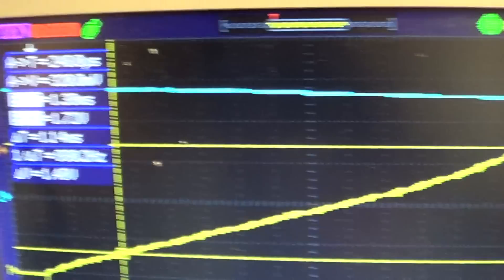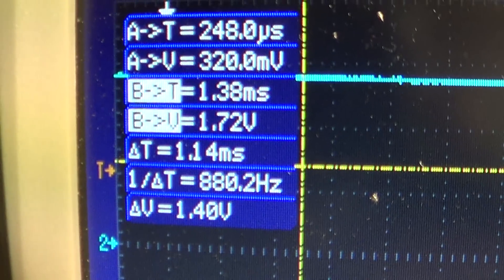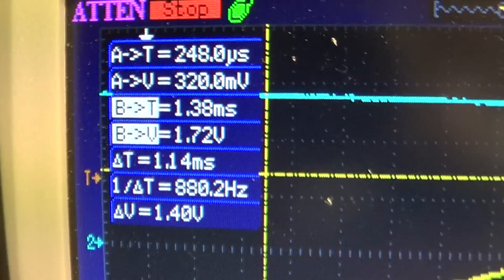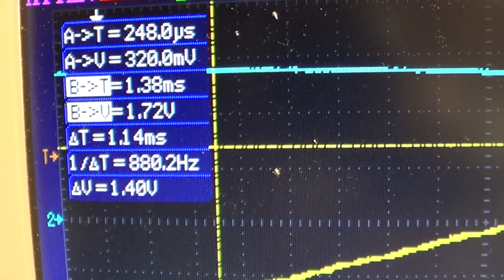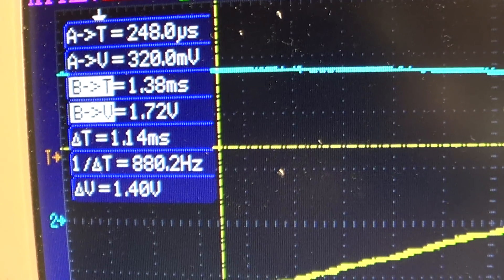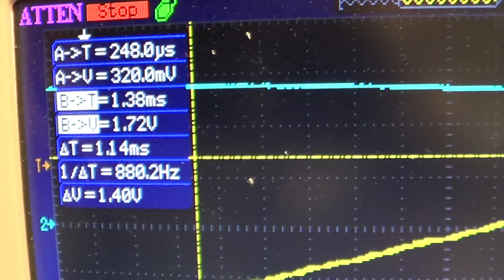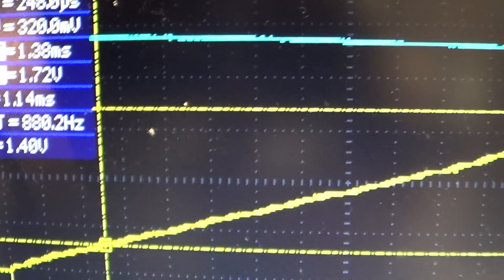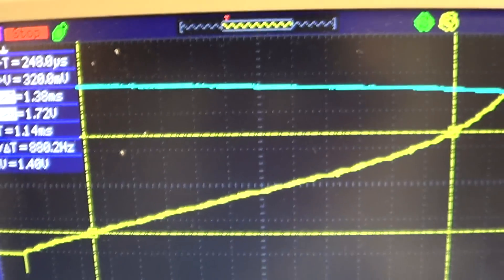And the channel B voltage is 1.72 volts, which is 1,720 millivolts divided by 12.5 ohms, which is 137 amps. Which is pretty darn good.